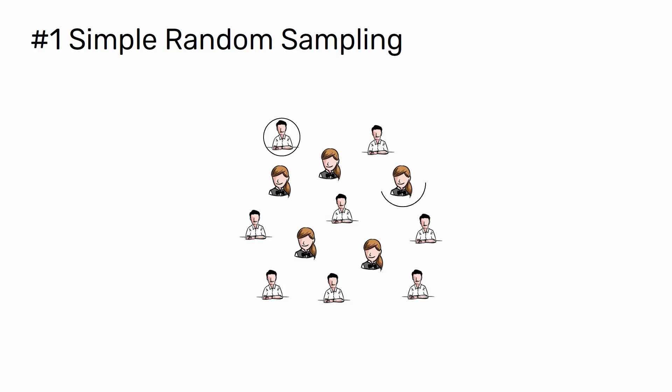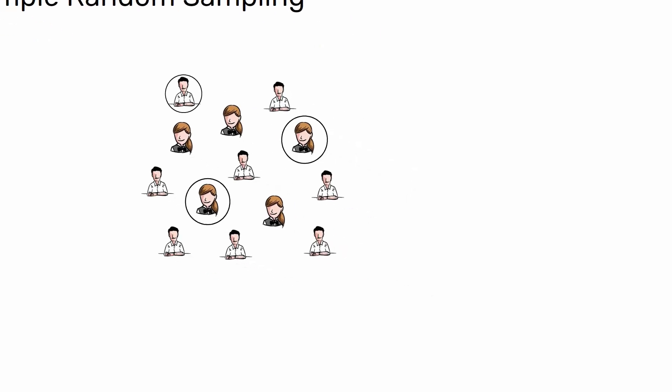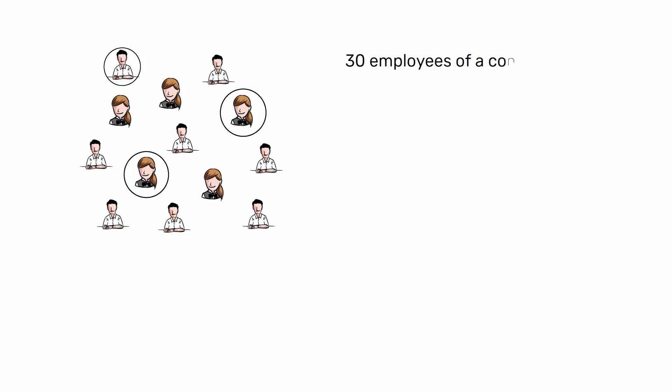To conduct this type of sampling, you can use tools like random number generators or other techniques. For example, you want to select a simple random sample of 30 employees of Company X. You assign a number to every employee in the company database from 1 to 100 and use a random number generator to select 30 numbers.